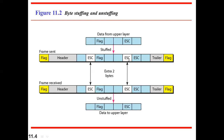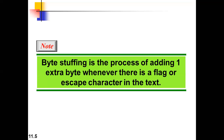The received frame contains a flag, header, escape characters, and then data. At the receiver, the process of unstuffing is done — any extra escape characters that were added are removed. Whatever escape characters were inserted during stuffing are now removed at the receiver end. Byte stuffing is defined as the process of adding one extra byte whenever there is a flag or escape character in the text.